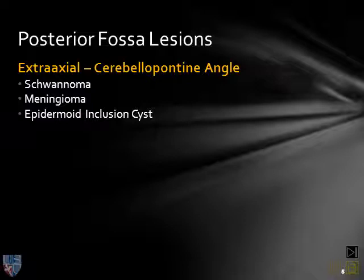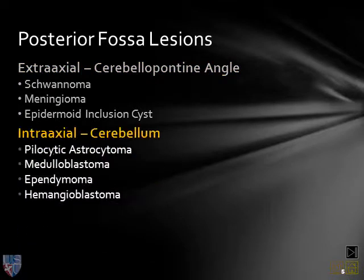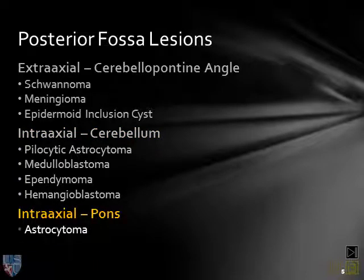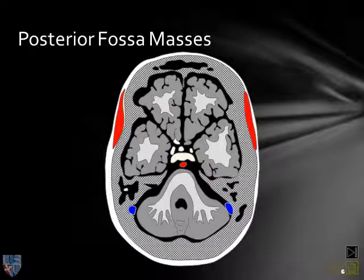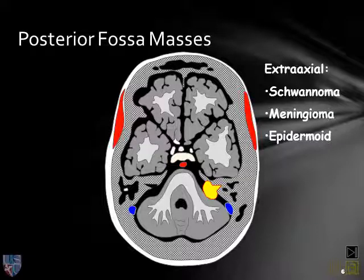We have extra-axial lesions, most commonly in the cerebellopontine angle cistern, including schwannoma, meningioma, and epidermoid inclusion cyst. We have intra-axial lesions involving the cerebellum, and intra-axial lesions involving the brain stem, most commonly involving the pons. Looking at this cartoon schematic of posterior fossa masses, we can imagine a lesion that is extra-axial in the cerebellopontine angle cistern, and this would include schwannoma, meningioma, and epidermoid inclusion cyst.